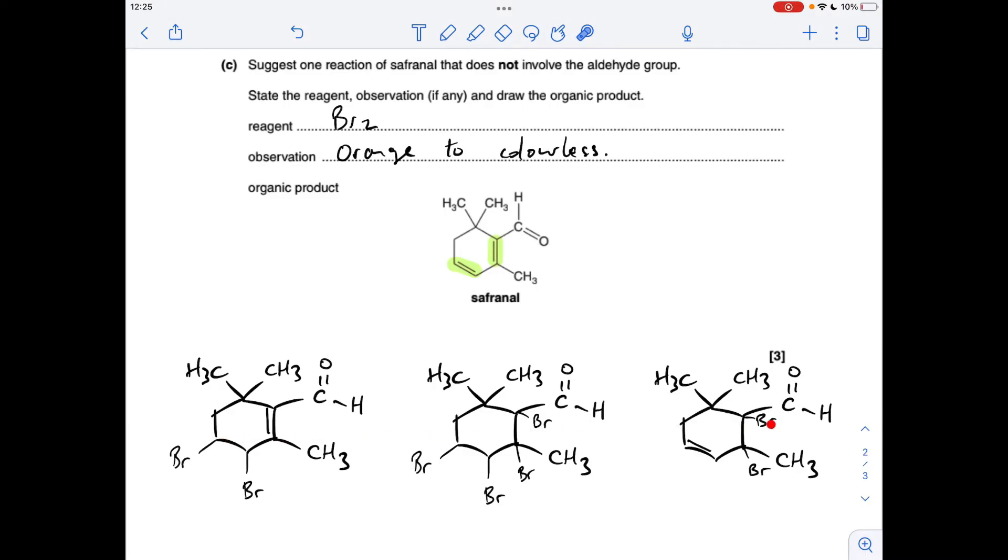Now there's a few possible answers you can give for the final product so any of these are fine. So basically this one here is just this double bond reacting with the bromine, this one here reacting both of them, and this one here is we're just reacting this one.